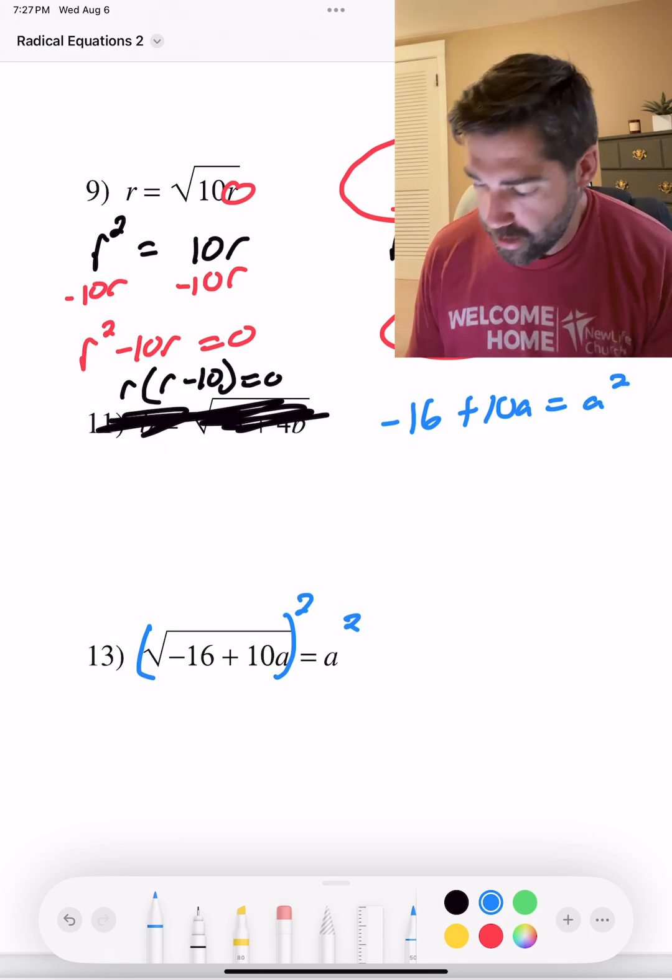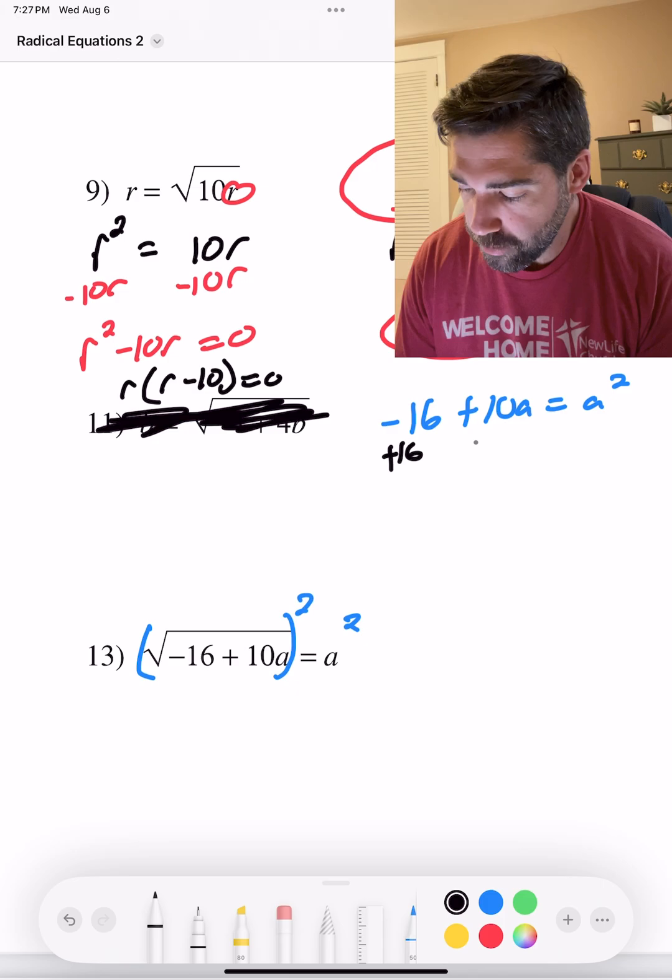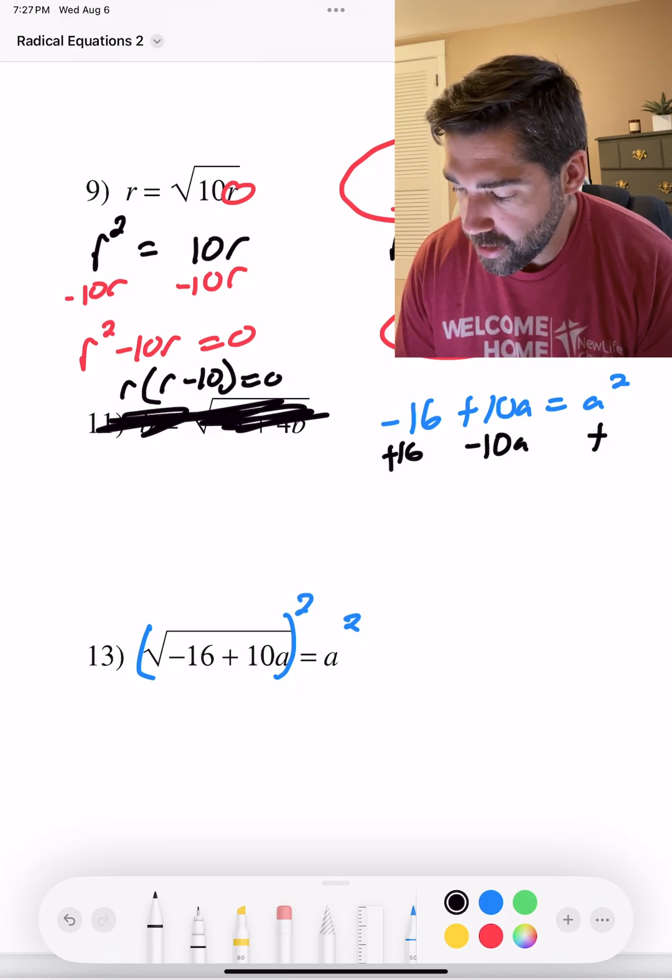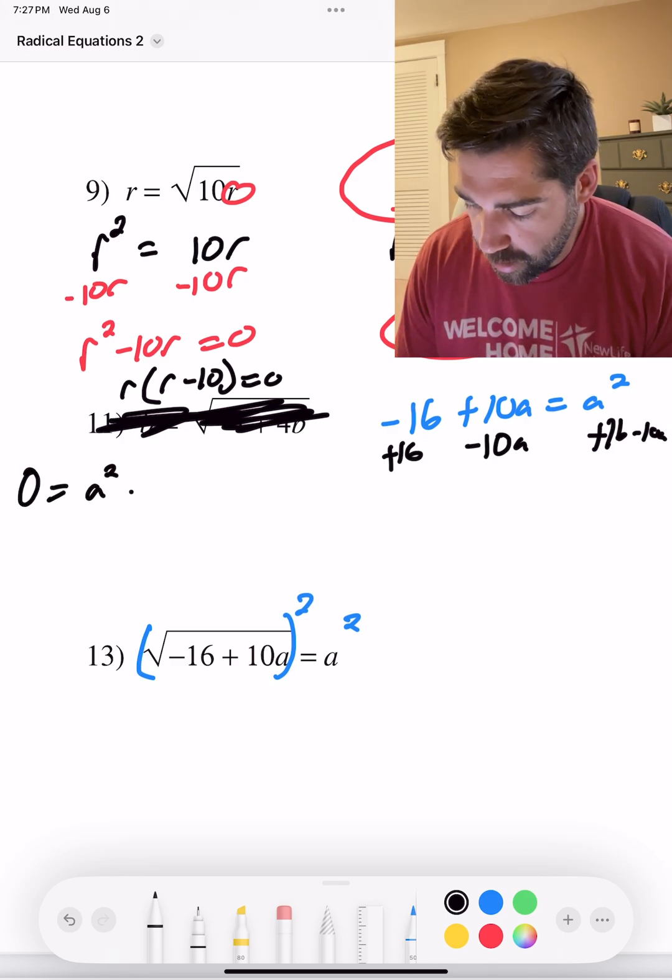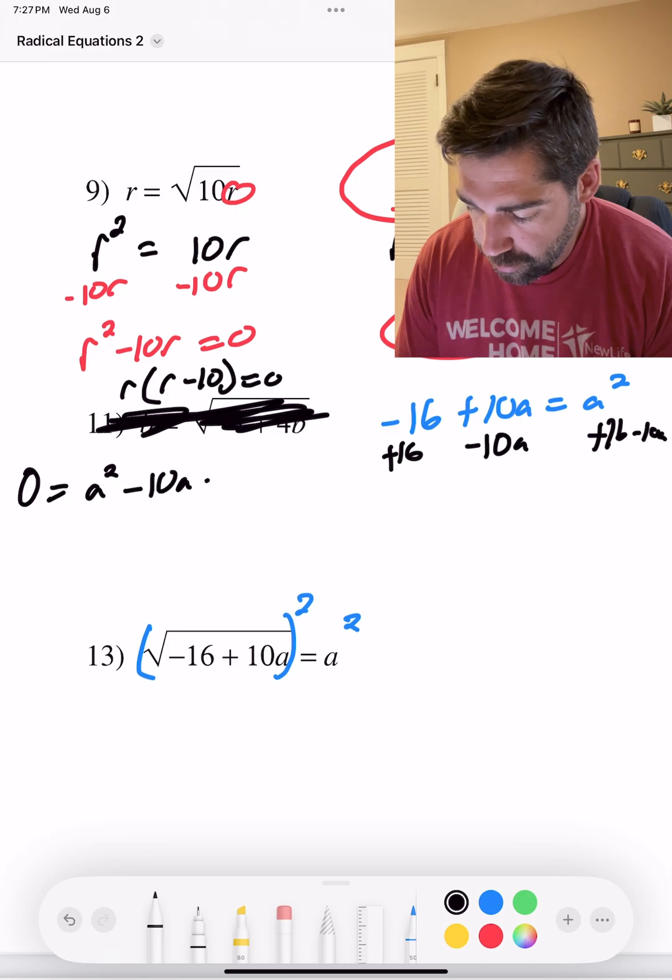Get everything to one side as fast as you can. Add 16, subtract 10a. We're going to add 16 and subtract 10a. And I'm going to order it a little bit better. I have a squared, everything is equal to zero, minus 10a plus 16. Zero equals,